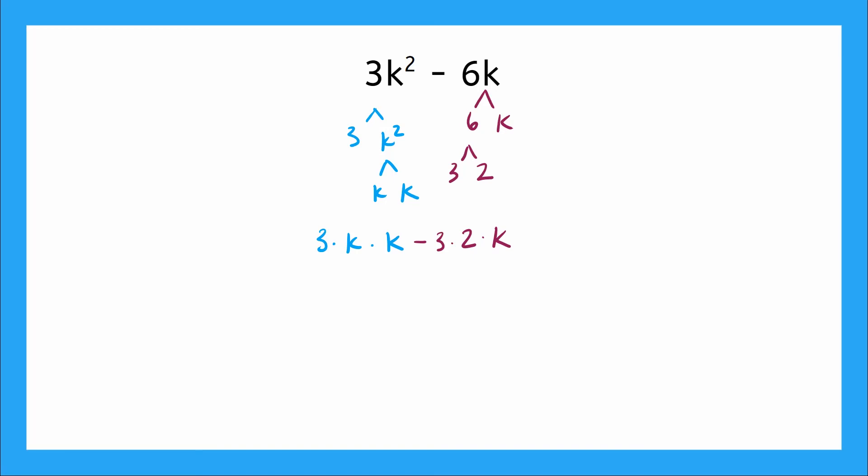So this is my expression all factored out. Now, do we see any common factors here? Yeah, I see a 3 in blue and a 3 in purple. And I have a k in blue and a k in purple. So does this mean I have two matching factors? It does. And that means I can pull both of the factors out.